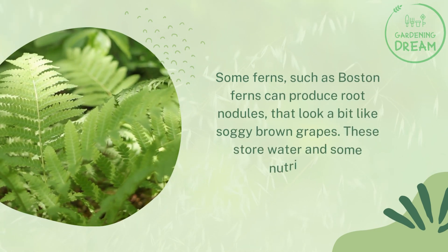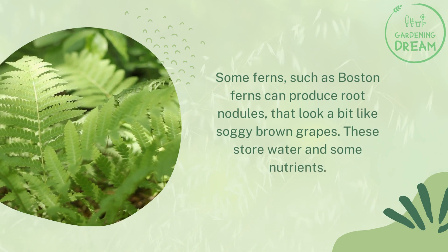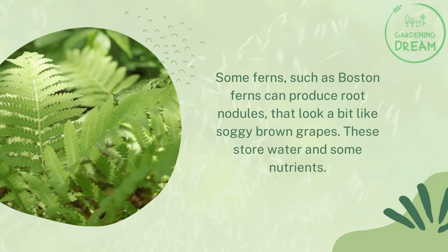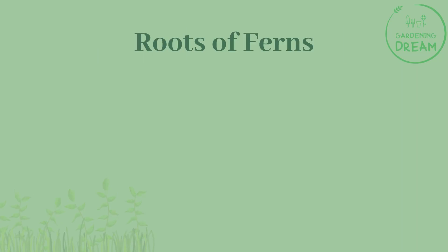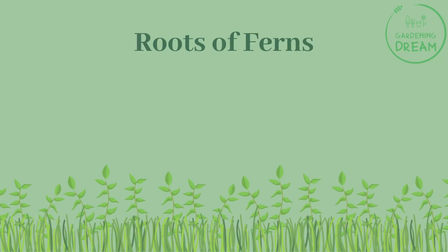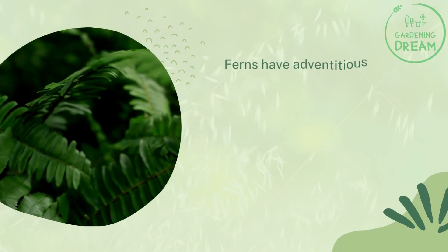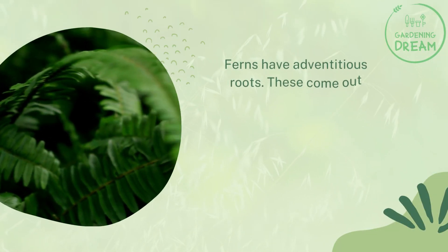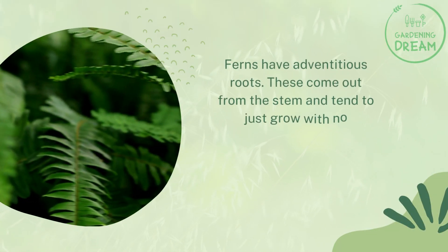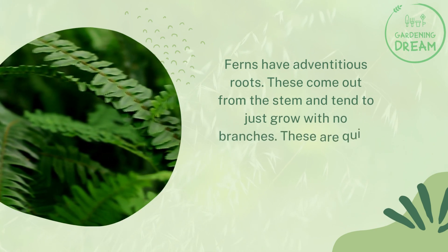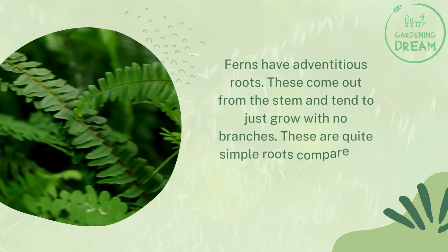Some ferns, such as Boston ferns, can produce root nodules that look a bit like soggy brown grapes — these store water and some nutrients. Ferns have adventitious roots that come out from the stem and tend to grow with no branches.